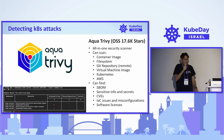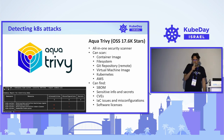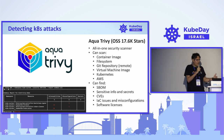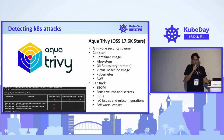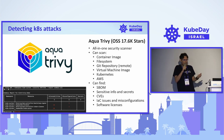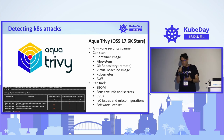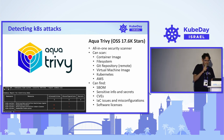Another open source tool is Aqua Trivy — an all-in-one security scanner. You can scan Git repositories, container images, file systems, and even Kubernetes. It provides information on SBOMs, vulnerabilities, misconfigurations, licenses, and more.